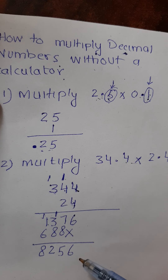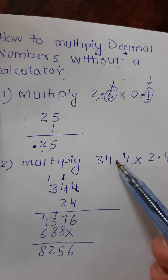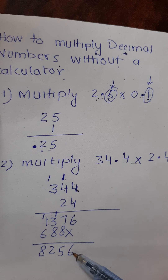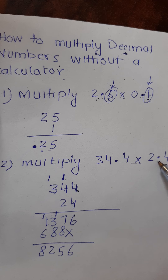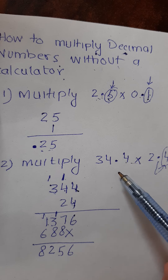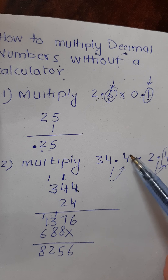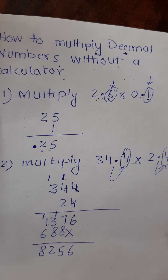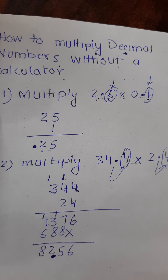Now this is the raw answer and you still need to insert the decimal to get your final answer. We have one digit after the decimal in 34.4 and one digit after the decimal in 2.4, so in total we have two digits after the decimal. Insert the decimal in your answer at the point where you have two digits after it.